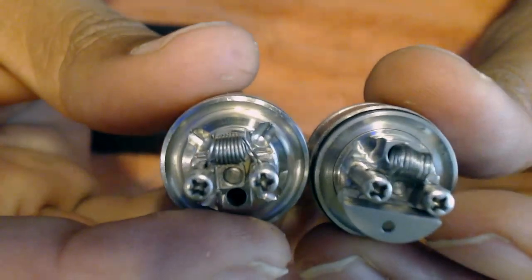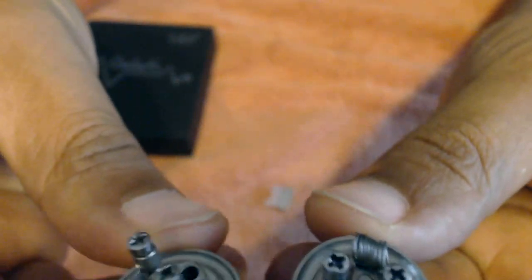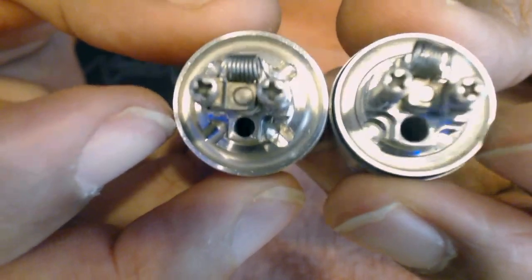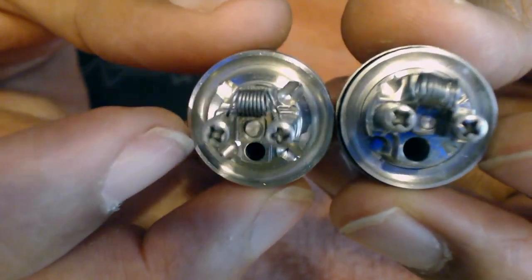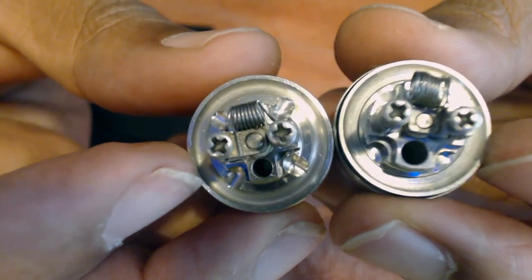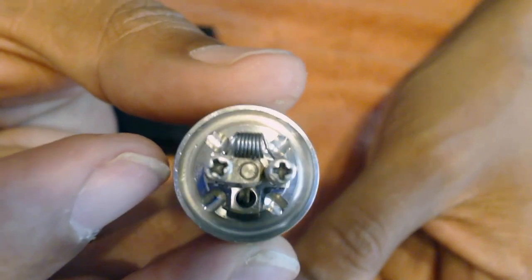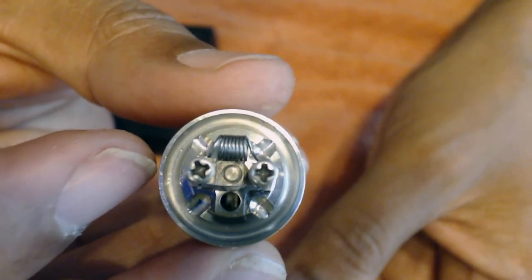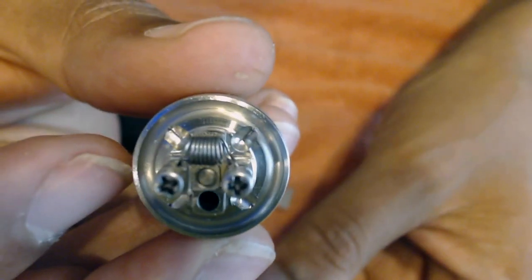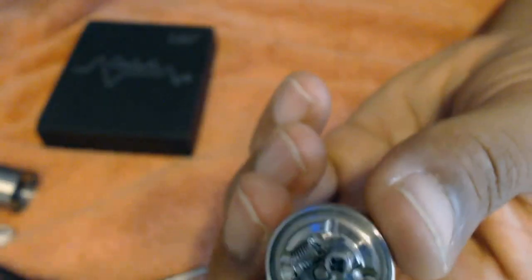So let me show you guys the old deck side by side. Let me pull this out so you guys can see your airflow. You can see it's a bigger airflow, bigger air hole. So on this one, I have a 3 mil diameter coil. On the new one, I have a 3.5. So it is a bigger deck. Much bigger airflow hole. The post holes, they look to me about the same. You're still going to be able to trap some good size wire in there.